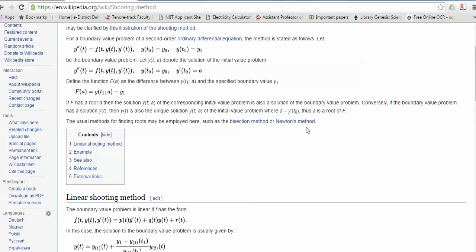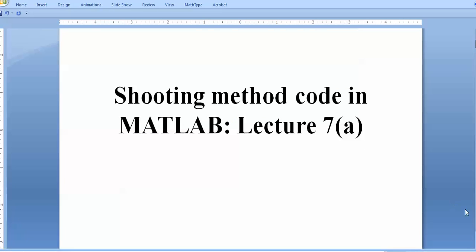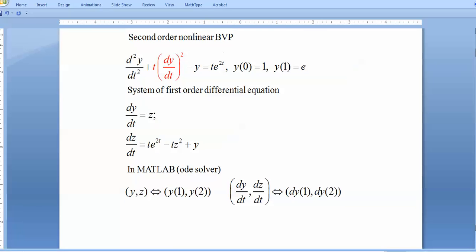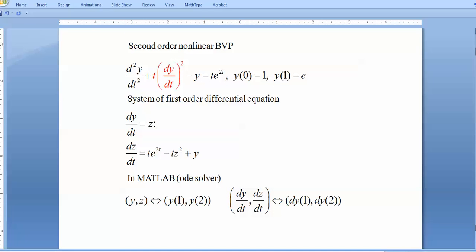The type of differential equation I am taking today is simple because I am starting this shooting method lecture series. In two or three lectures I will explain how you can solve coupled systems, higher-order systems, and different types of differential equations with the shooting method. I am taking a nonlinear equation — the red color shows the non-linearity — and the domain is from 0 to 1 with boundary conditions y(0)=1 and y(1)=e.